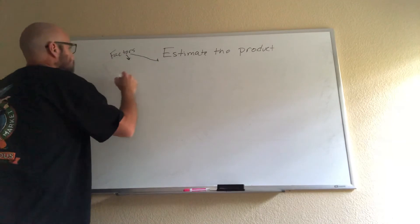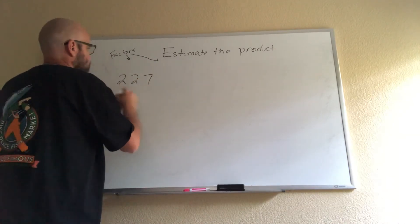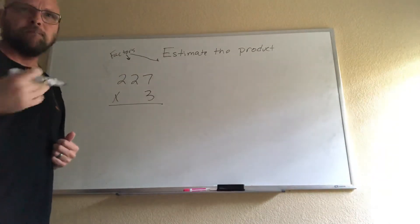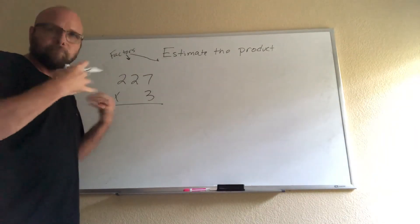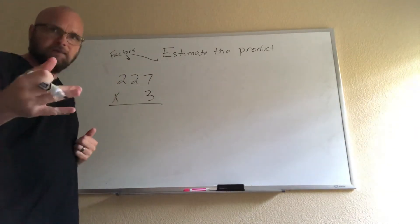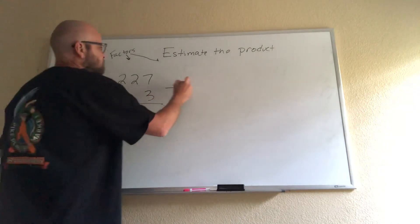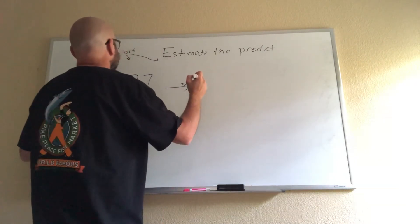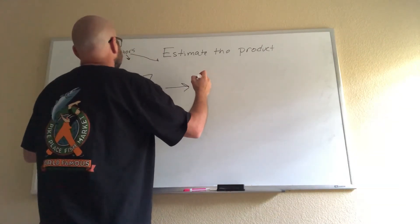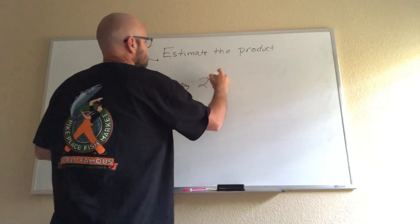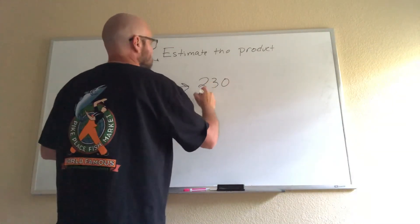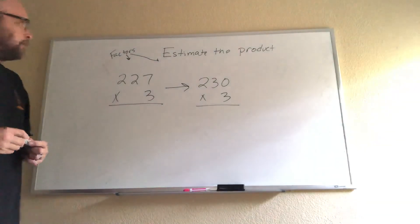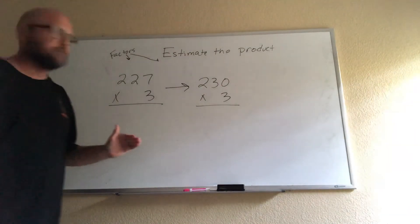227 times 3, and I'm going to do this a little differently because I'm thinking a little differently than what you may have done. I'm going to change this to 230 times 3. Why 230? Well first, it's close to 227.